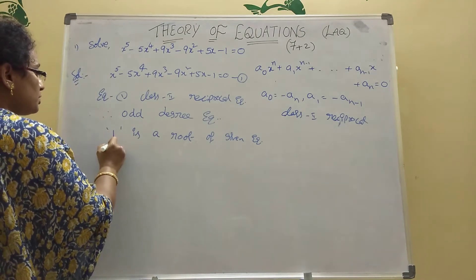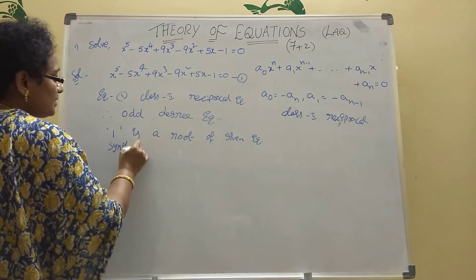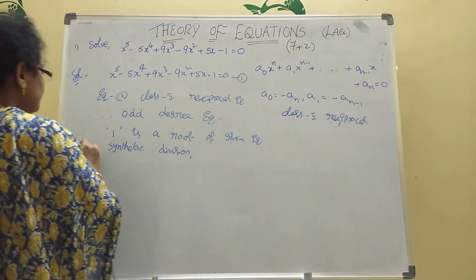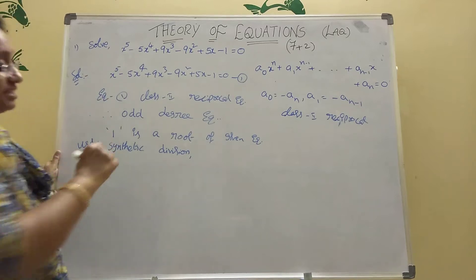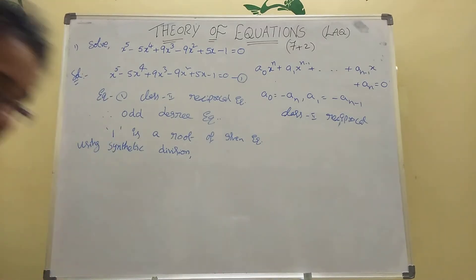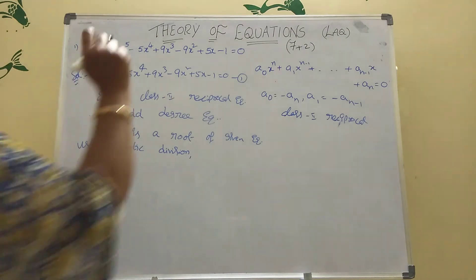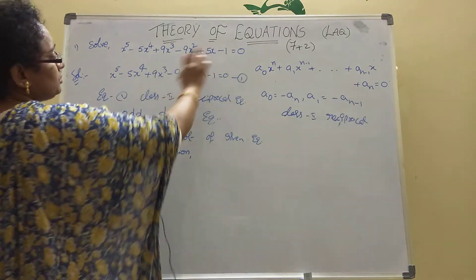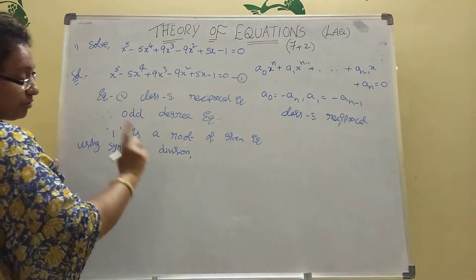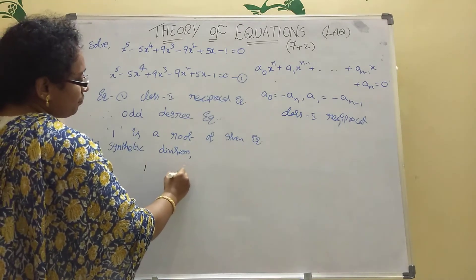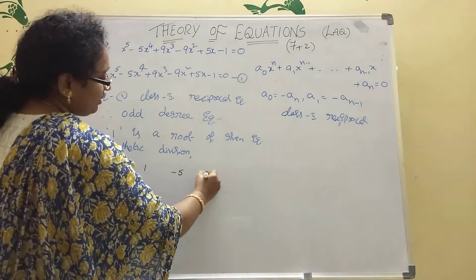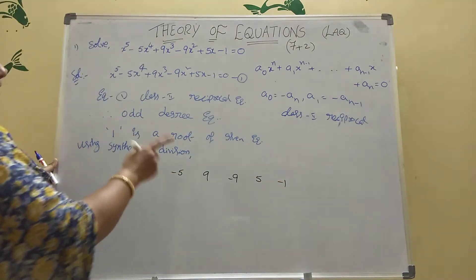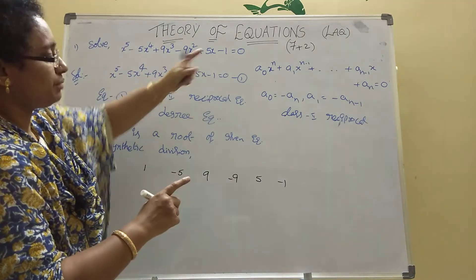Now by using synthetic division. Synthetic division means first you have to write the coefficients. Degrees: 5, 4, 3, 2, 1, 0. Then write coefficients: 1, -5, 9, -9, 5, -1. Then here 1 is the root, so write 1 there. First write 0, then draw a bar line like this.